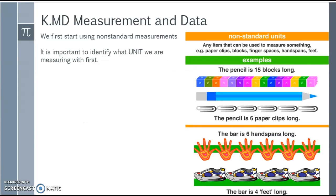We first want to start by going over non-standard units of measure. It's important to identify what the unit we are measuring with is first — emphasizing the unit is so important when we move to fractions in third grade. So for example, if we take this blue pencil, using blocks as the unit we would need 15 blocks to measure the same length. But if we use paper clips lined end to end, we would only need six. Depending upon the unit depends upon how many we'll need.